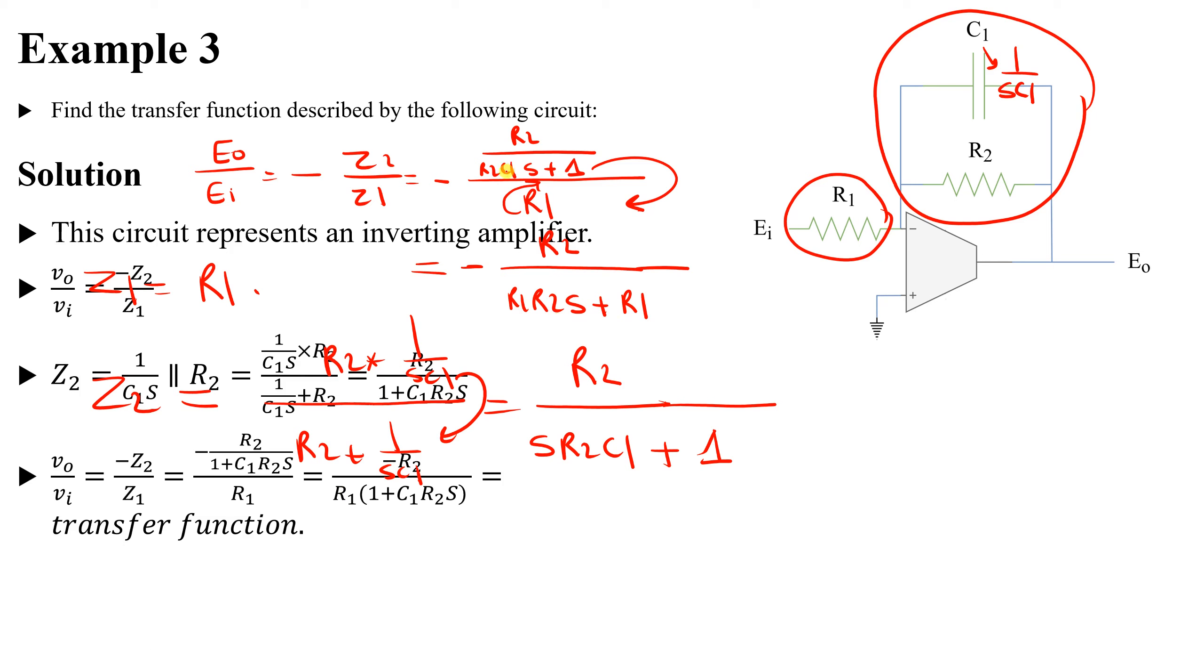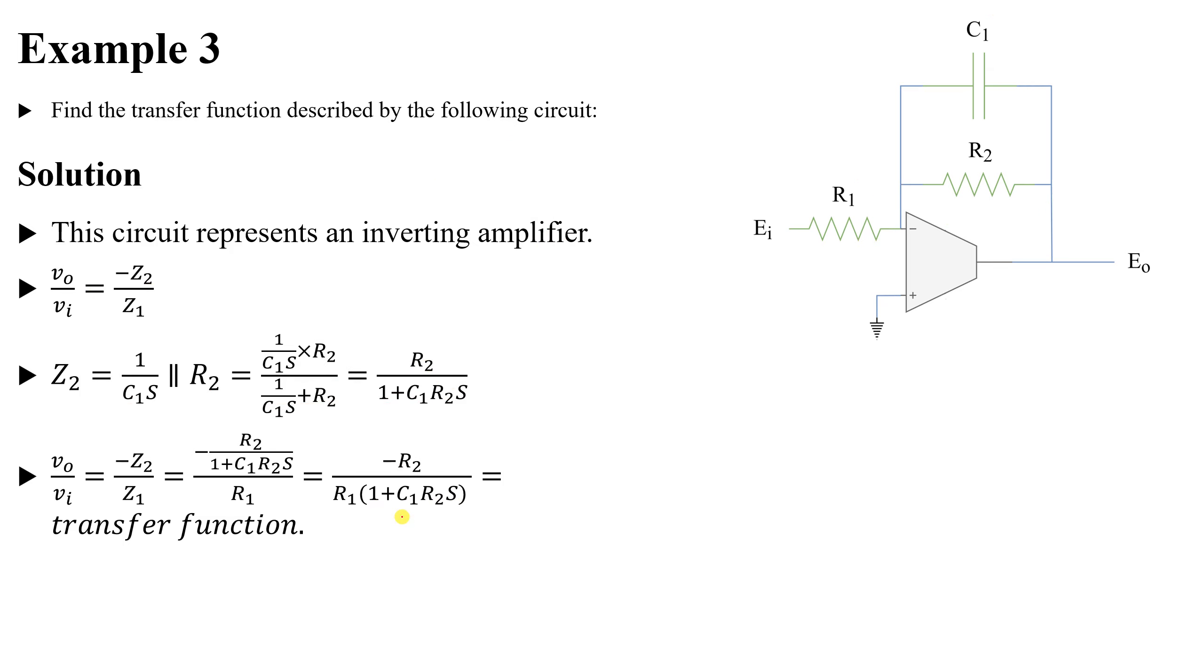So it will be R2C1R1, so we need here C1. So if you take R1 as a common factor like this, it will be C1R2s plus one. So I hope you now understand these two examples on how to get the transfer function for electric circuits.